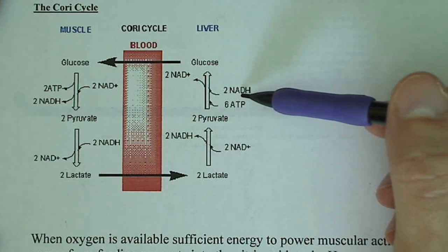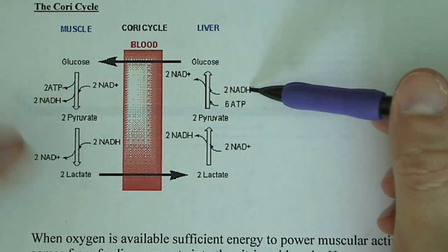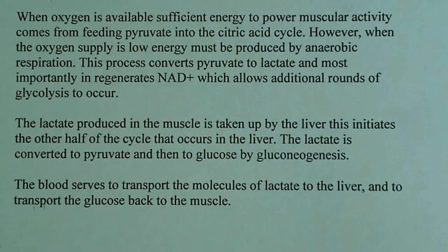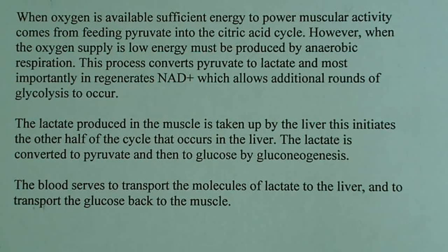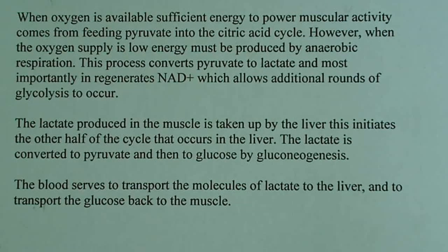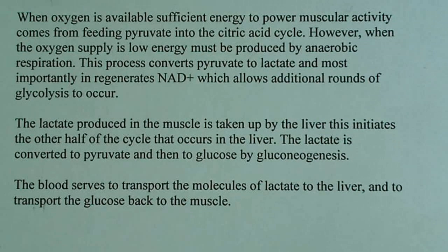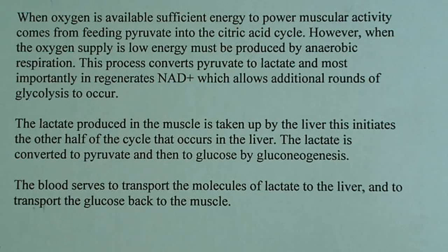So really, not terribly, all pathways we've already seen. I've already discussed glycolysis, I've already discussed fermentation, both to lactate and ethanol, and I've already discussed gluconeogenesis. So, what I did here was I just talked about it a little bit, and I said when oxygen is available, sufficient energy to power muscular activity comes from feeding pyruvate into the citric acid cycle. But however, if oxygen supply is low, then energy must be produced by anaerobic respiration. Remember, there's anaerobic glycolysis. That's how we get lactate. And the process converts pyruvate to lactate, and most importantly, it regenerates NAD+. Remember I said that's most important, because if we don't have any NAD+, then we can't continue going through glycolysis. And that could be totally detrimental to the cell, and which allows additional rounds of glycolysis to occur.